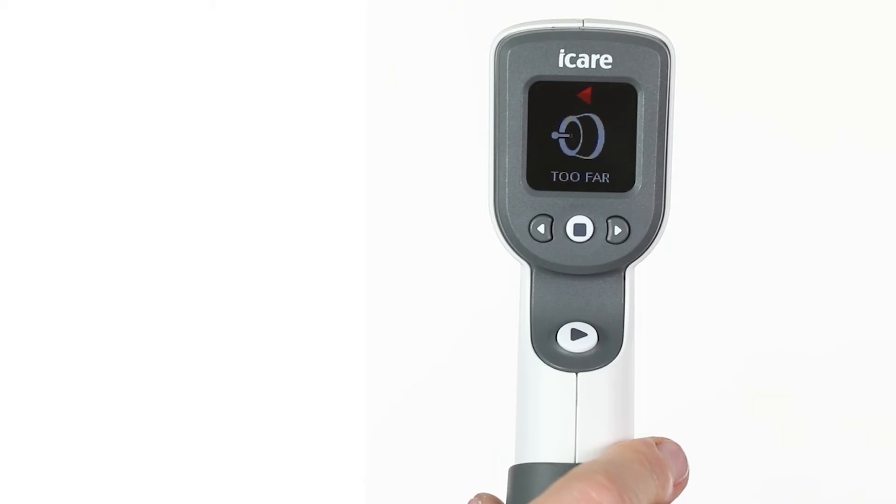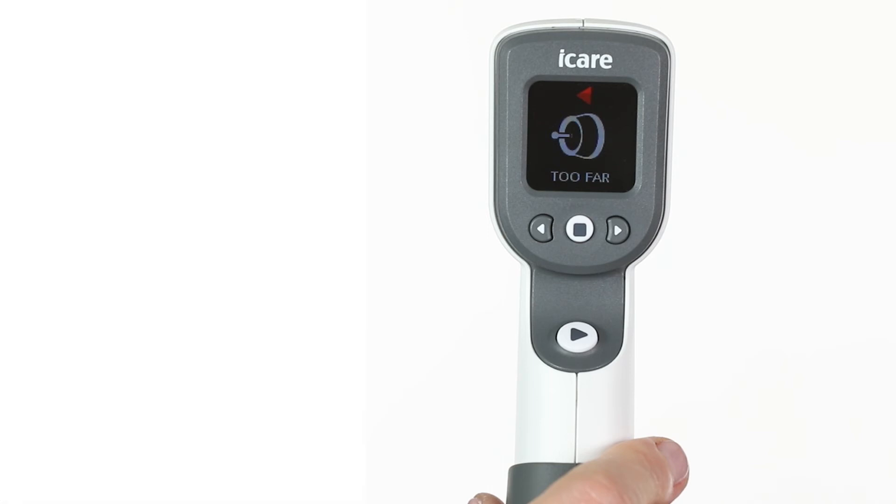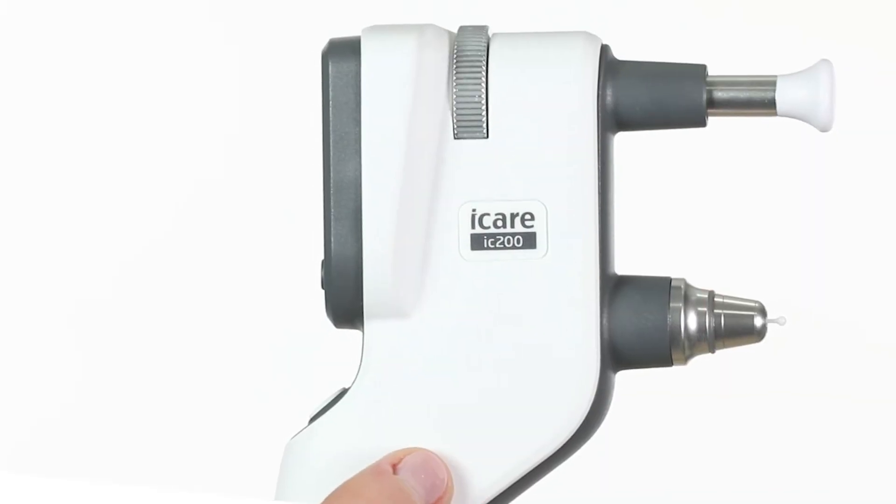Error messages: If there is an error when taking a measurement, the tonometer will beep twice, display the error message, and the probe base will flash red. For example, if you are too far from the cornea, then 'too far' will show in the display, and the probe base light flashes red.